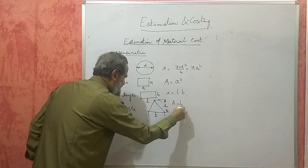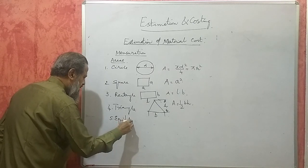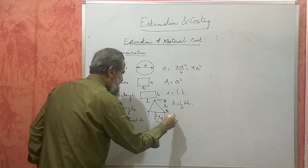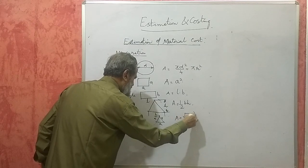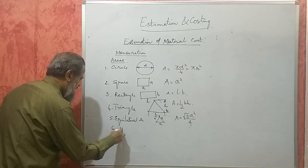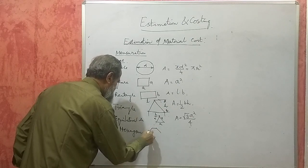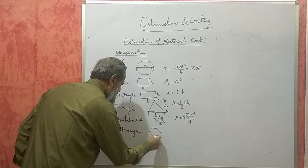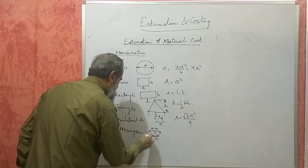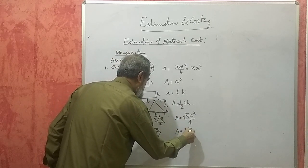If it is an equilateral triangle — that is, all sides are equal — then the area will be equal to (√3 / 4) a², where a is the side of the triangle. Next, if it is a regular hexagon — a six-sided figure with all six sides equal — if you draw its diagonals, it gets divided into six equilateral triangles, so its area will be (√3 / 2) a².